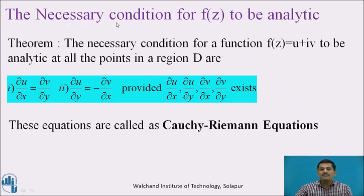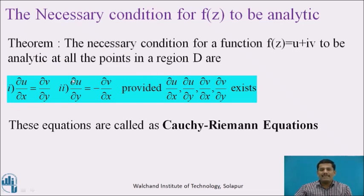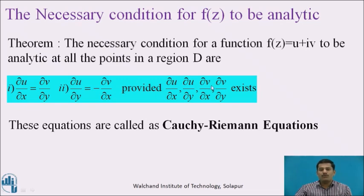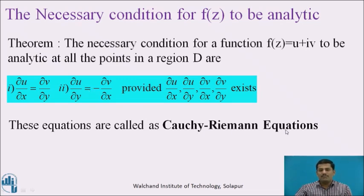First we will deal with the necessary condition for f of z to be analytic. The theorem states: the necessary condition for a function f of z equal to u plus iv to be analytic at all points in a region d, it must satisfy these two equations: dou u by dou x equal to dou v by dou y, and dou u by dou y equal to minus of dou v by dou x, provided that all four partial derivatives exist. These two equations are called the Cauchy-Riemann equations.